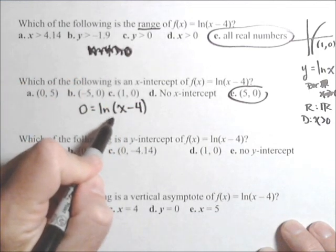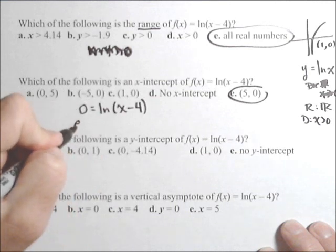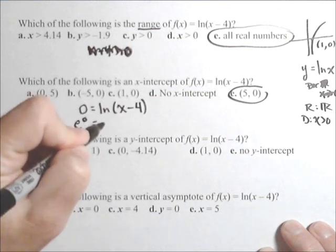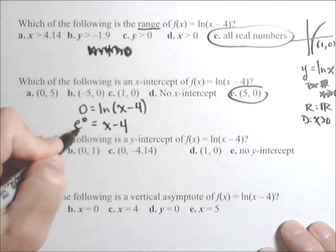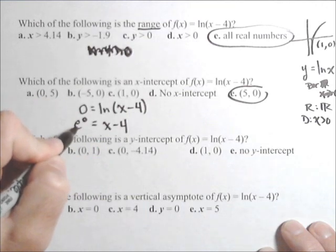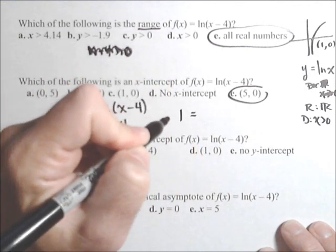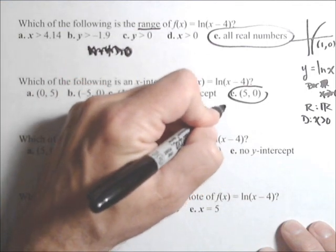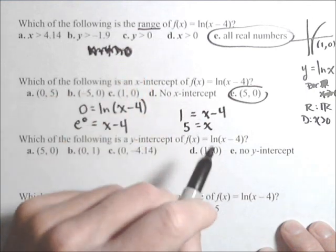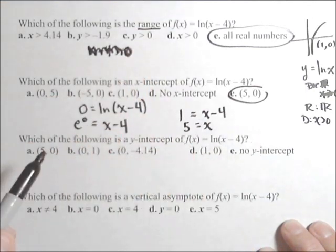ln of x minus 4. ln is base e, so rewriting this as an exponential: e to the 0 equals x minus 4. Anything to the 0 power is 1. Don't forget that. I hear 0 a lot. Anything to the 0 power is 1 equals x minus 4. Add 4 to both sides, you get x equals 5. So, there's a couple different ways of looking at that one.